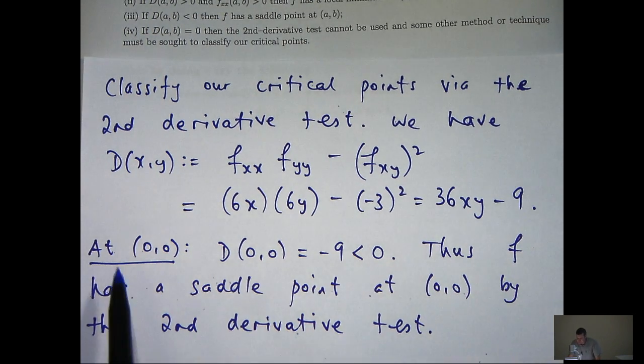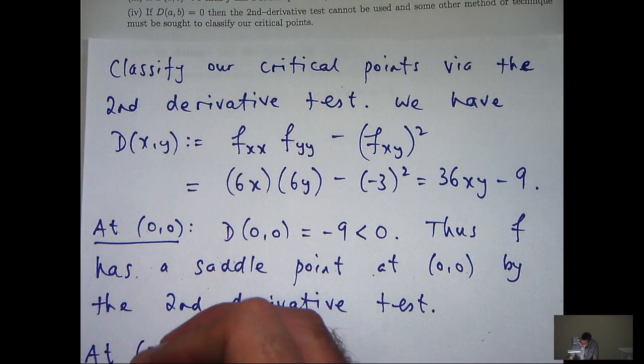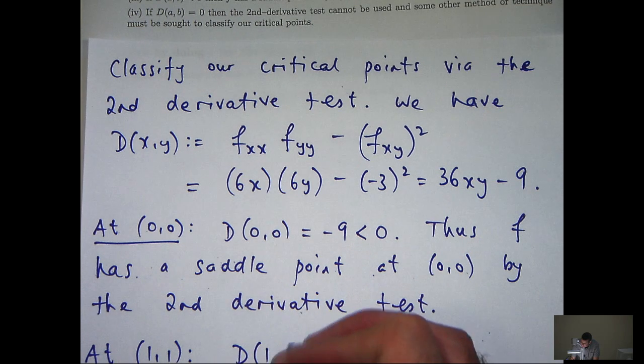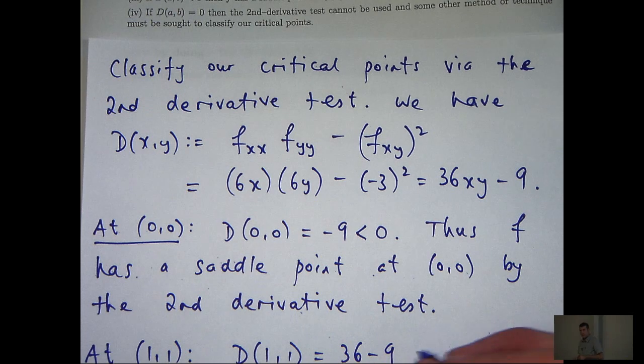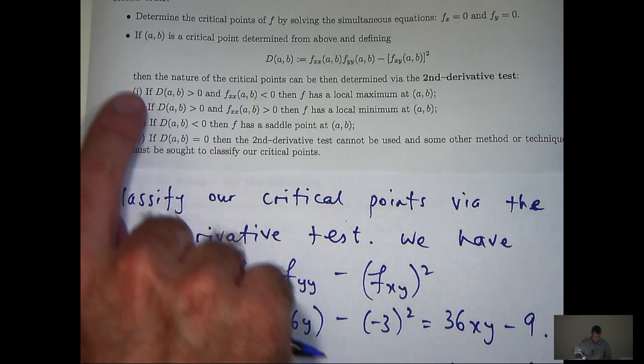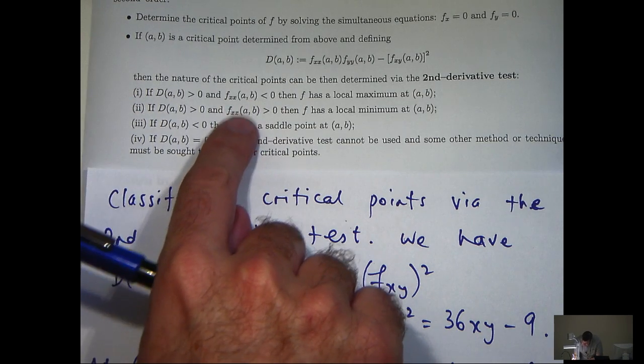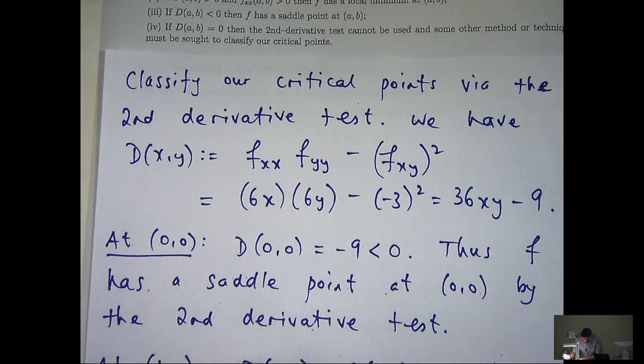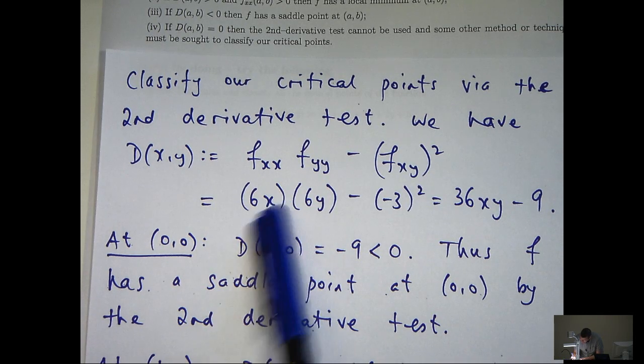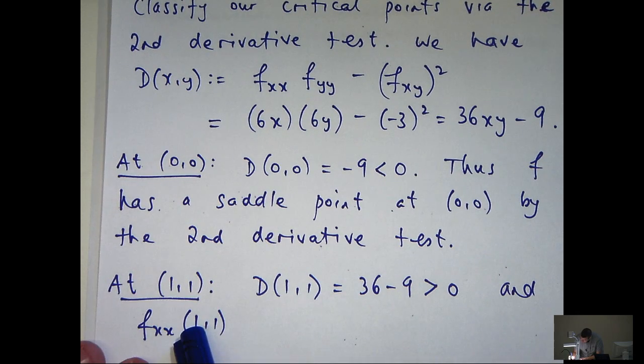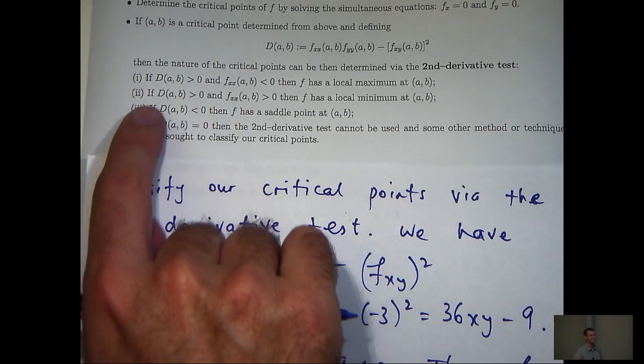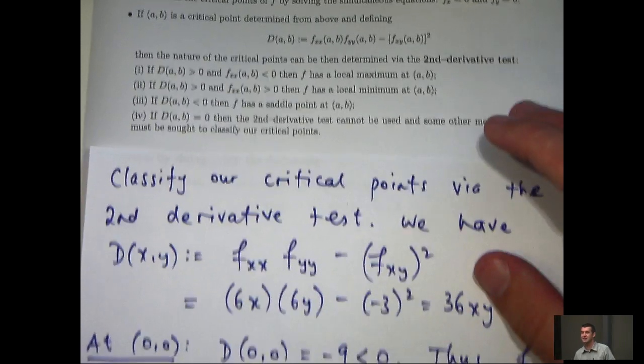What about the other critical point? Well let's classify that. So we go up to d, sub in x equals 1, y equals 1. We're going to get 36 minus 9 which is going to be positive. So let's go to our second derivative test. Well it's going to be either case 1 or case 2. We have to look at this second derivative with respect to x. So f sub xx is 6x, so when x equals 1 we'll get just 6 and that's positive. So if we go back to our second derivative test it's the second case. So f will have a local minimum at (1, 1).